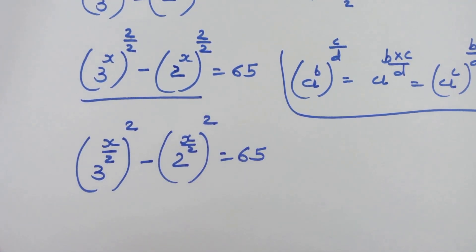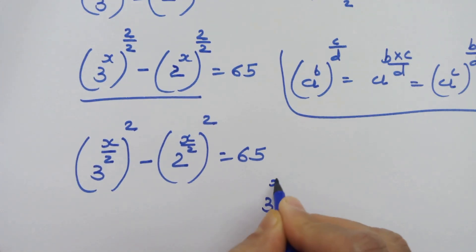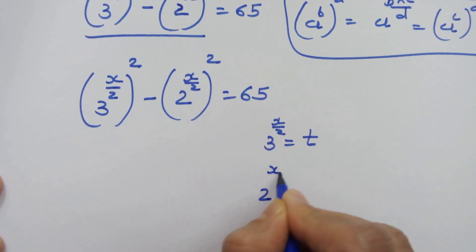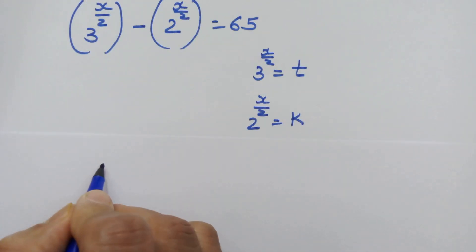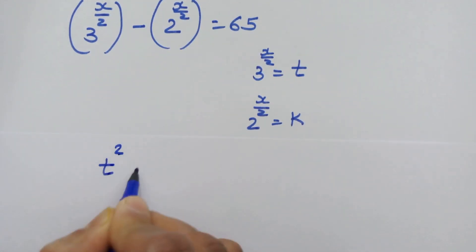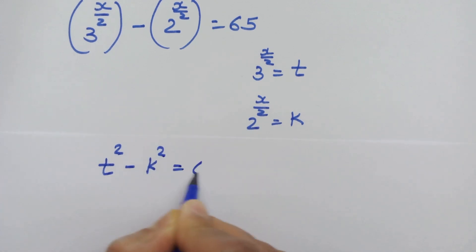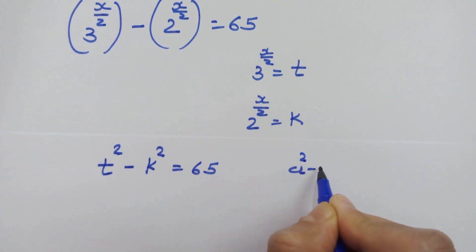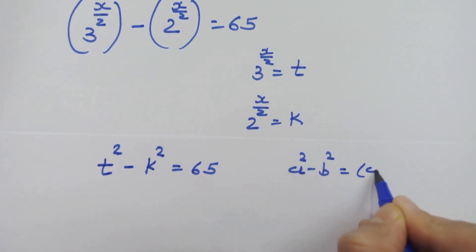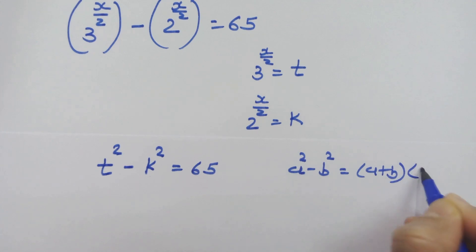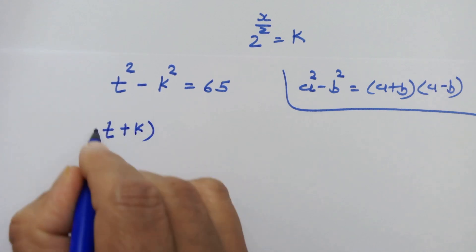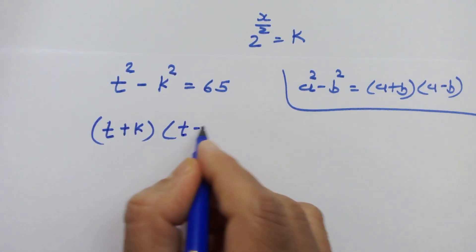For convenience, let's call 3 raised to x upon 2 equal to t, and 2 raised to x upon 2 equal to k. So now we have t squared minus k squared is equal to 65. This is an identical situation like a squared minus b squared equals a plus b into a minus b.